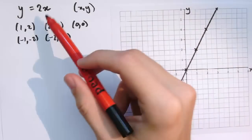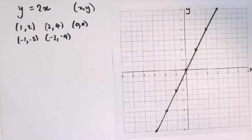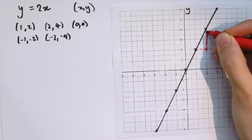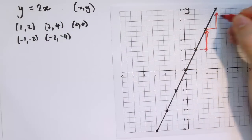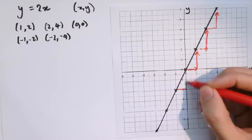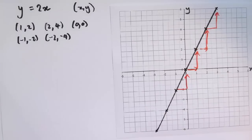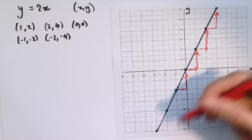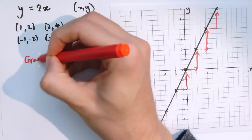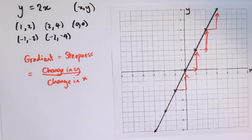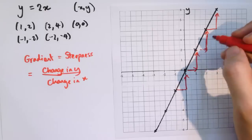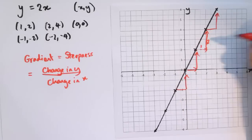We can see that if we increase x by 1, y increases by 2. So x goes up by 1, y goes up by 2, and that's true everywhere on this graph. For a straight line, that's what we call the gradient — it's how steep the line is. A formula for the gradient is the change in y divided by the change in x. So between any two points, the change in y is 2 and the change in x is 1.